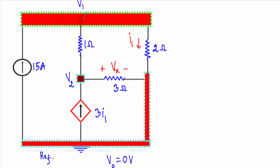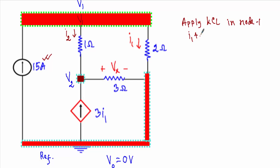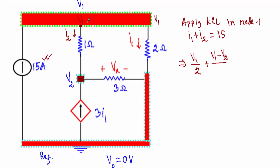Applying KCL at node 1: the 15 ampere current is known and incoming; the currents through the branches are unknown. Let I1 be the current through the 2 ohm resistor and I2 be the current through the 1 ohm resistor. KCL gives: I1 plus I2 equals 15 amperes. I1 equals V1/2, and I2 equals (V1 minus V2)/1.